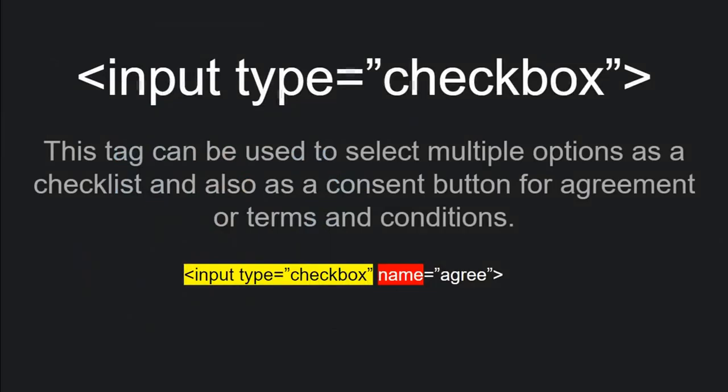After radio buttons, the next topic is checkboxes — similar to terms and conditions forms where you tick multiple boxes. Checkboxes allow selecting multiple options at once, unlike radio buttons.